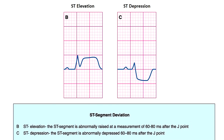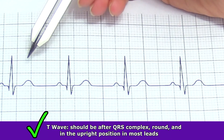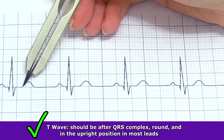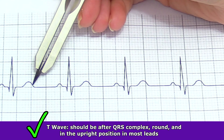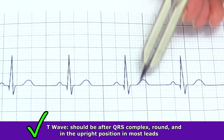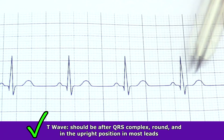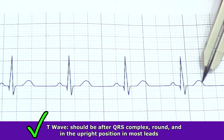Here is an example of an abnormal ST segment — ST elevation and ST depression. The T wave should come after the QRS complex and should be round and in the upright position in most leads.